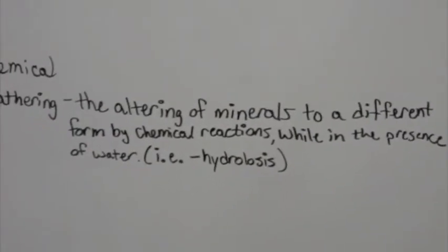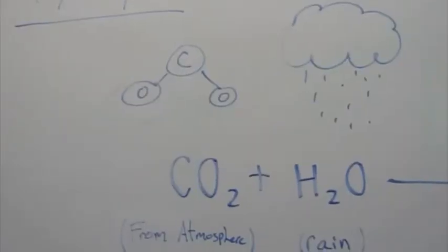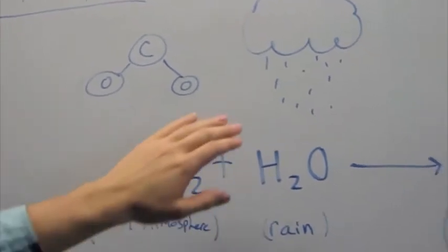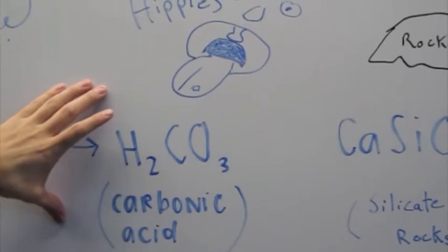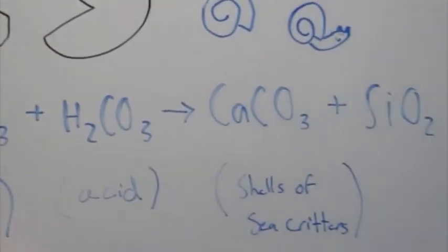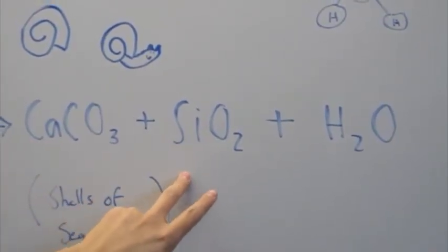Chemical weathering is when rocks are altered by chemical reactions while water is present, like hydrolysis. Taking these pulverized particles, much like this halite I have here, which dissolves in water — that's much like hydrolysis. There are two kinds of chemical weathering: hydrolysis and dissolution. Hydrolysis consists of CO2 from the atmosphere and rain. This forms carbonic acid, typically in groundwater. This groundwater can react with silicate rocks, and this forms ions that run off in streams and rivers into the ocean to create CaCO3, SiO2, and H2O.